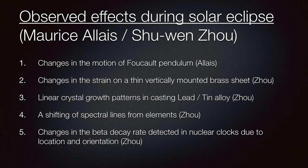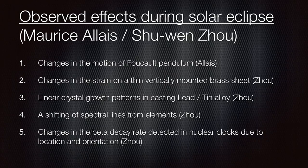There will also be a link to the PDF presentation from which the slides you see here are derived. The five effects that were observed, for which I will attempt to provide a hypothesis, are: changes in the motion of a Foucault pendulum by Maurice Elias in the 1950s; changes in the strain on a thin vertically mounted brass sheet; linear crystal growth patterns in casting lead-tin alloy; the shifting of spectral lines from elements; and changes in the beta decay rate detected in nuclear clocks due to location and orientation.